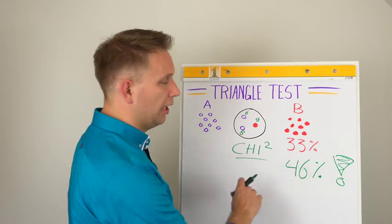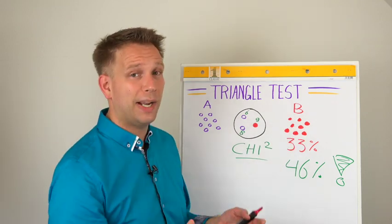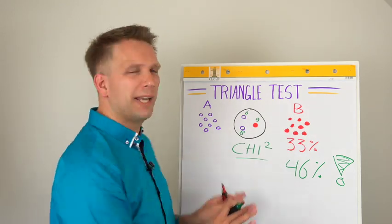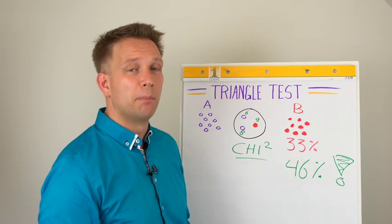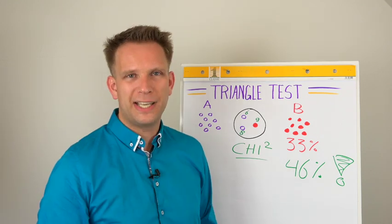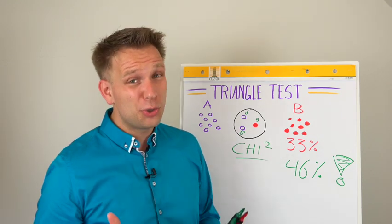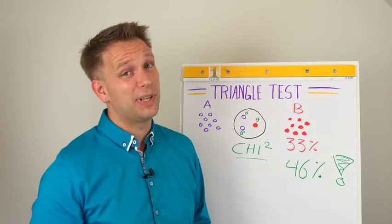So that means when you are well under half of the correspondents picking the correct new sample, you say they are the same. And as soon as you are roughly at half, so more than 45 definitely, but more than 46%, then you say this sample is different. Which usually, in case when you are doing a triangle test like this, means that something went wrong.